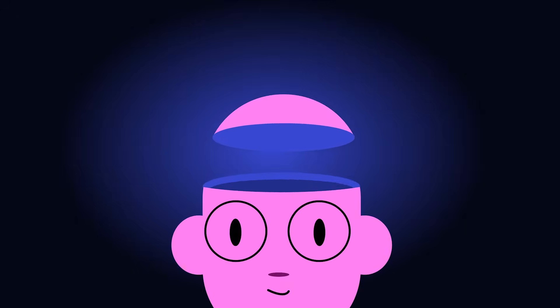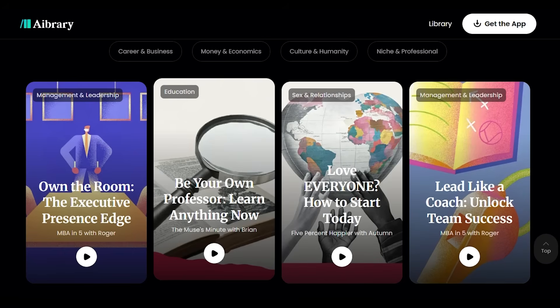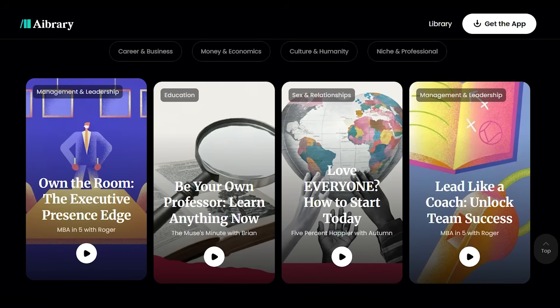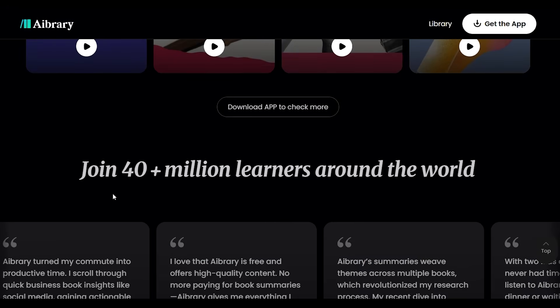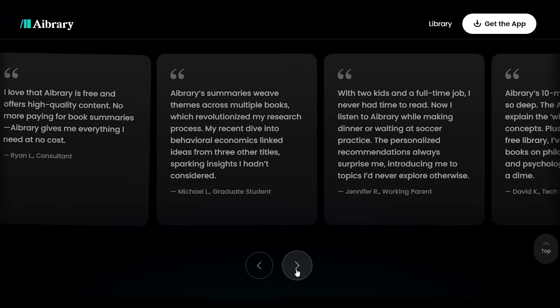You just scroll a clean vertical feed, tap what catches your eye, and get instant insight. It's like TikTok, but for your brain. And the more you use it, the smarter it gets. Ibrary uses AI to learn your interests and recommend summaries that actually matter to you. You could even pick from interactive AI avatars. They break things down like your own personal expert.